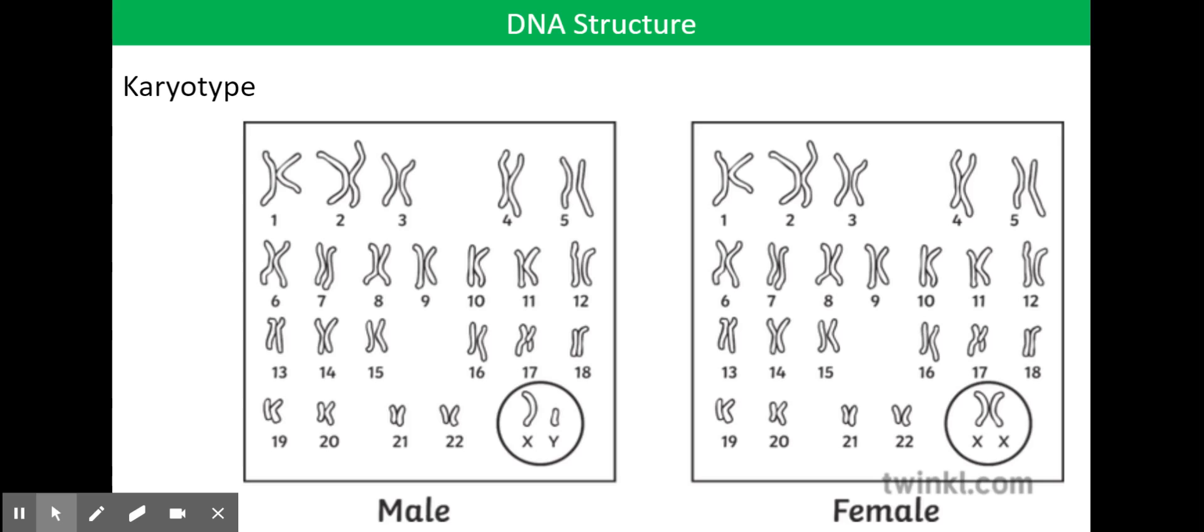All males and all females have two copies of every single chromosome. They have two copies of chromosome 1, two copies of chromosome 2, two copies of chromosome 3, all the way up until number 22. They've got two copies of chromosome 22.